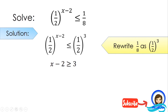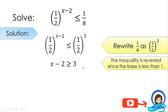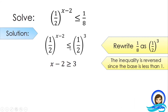As you can see, the inequality symbol is reversed. Why? It's because the base is less than 1 — our base is 1/2, and this is less than 1. This is what the property of inequality states: whenever the base is in between 0 and 1, the inequality symbol changes. If the base is greater than 1, there is no need to change the inequality symbol.